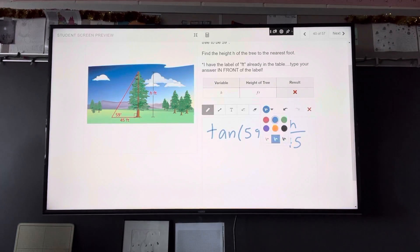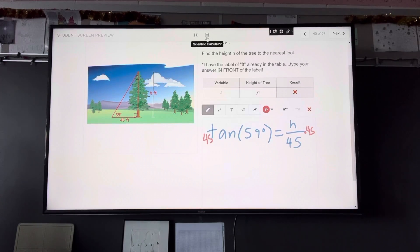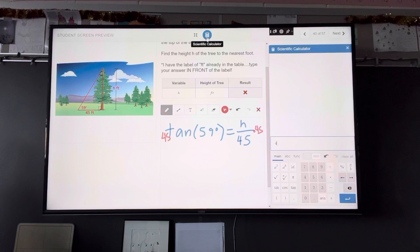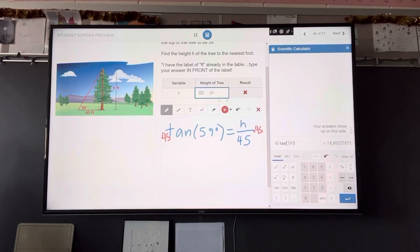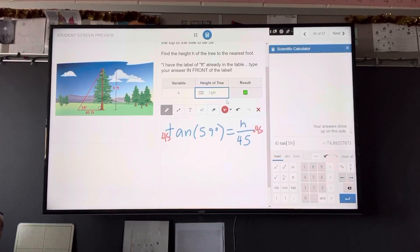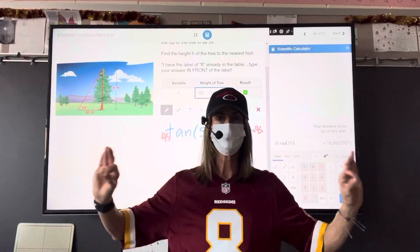I'll do that in a different color. And then take out our calculator and do 45 times the tangent of 59 degrees. This problem is asking us to round to the nearest foot, so we will round up to 75. And for this software, you need to put the 75 in front of the feet. We're good. How are we doing? Regular trig.